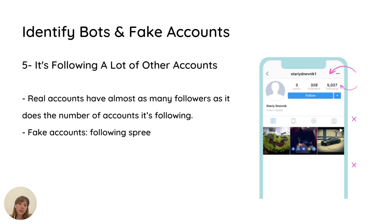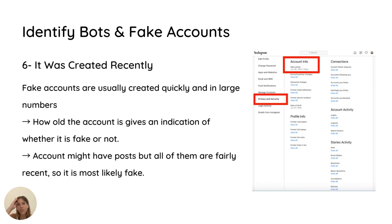It is also a good indication that the account is fake if they are following far more accounts than the number of followers they have. In general, real accounts have roughly as many followers as accounts they are following. Fake accounts usually go on random and intense following sprees and end up following more accounts than they have followers. You can also go to the account history to see how old the account is, as fake accounts are often created quickly and in large numbers.